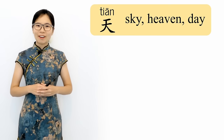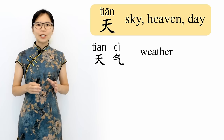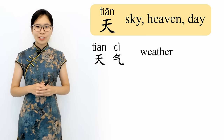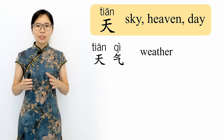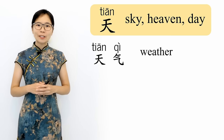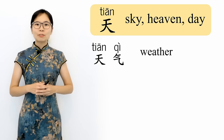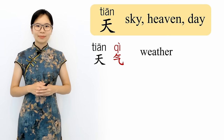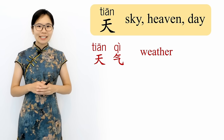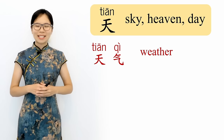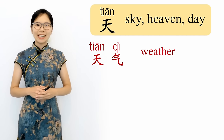Here are some words that use the character 天. 天气 — you may have heard the word 气 in English or in Kung Fu movies. It means a person's life force or energy, and it is a big part of traditional Chinese medicine and philosophy. So that might make it easy to understand why 天气, or sky energy, means the weather. 天气, weather.